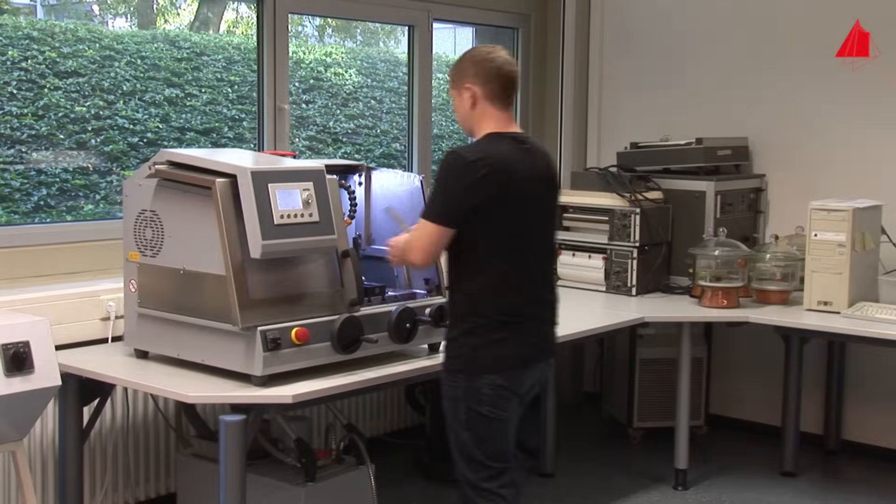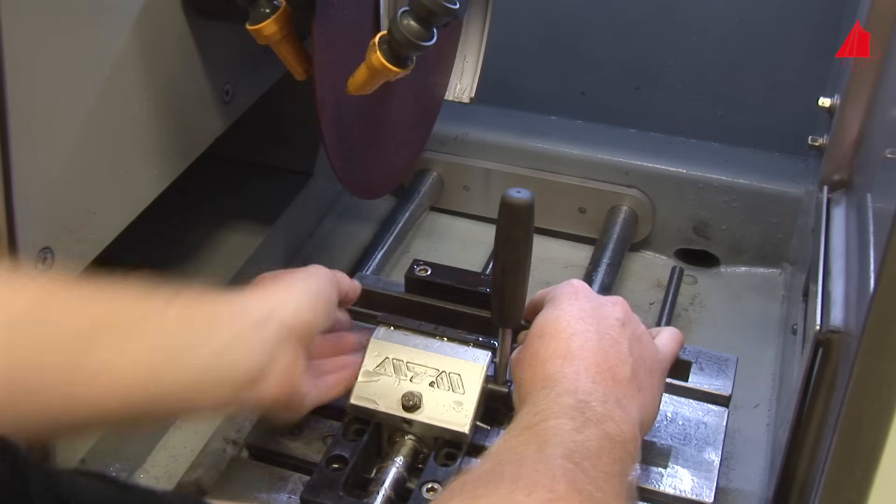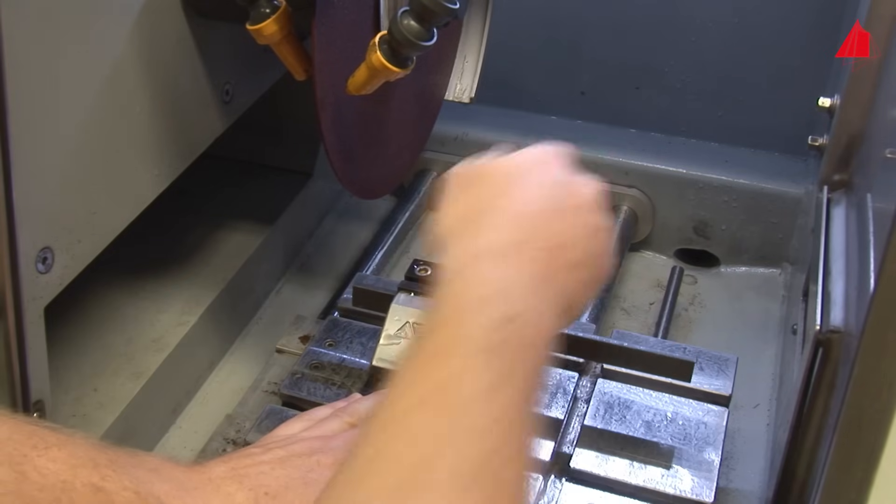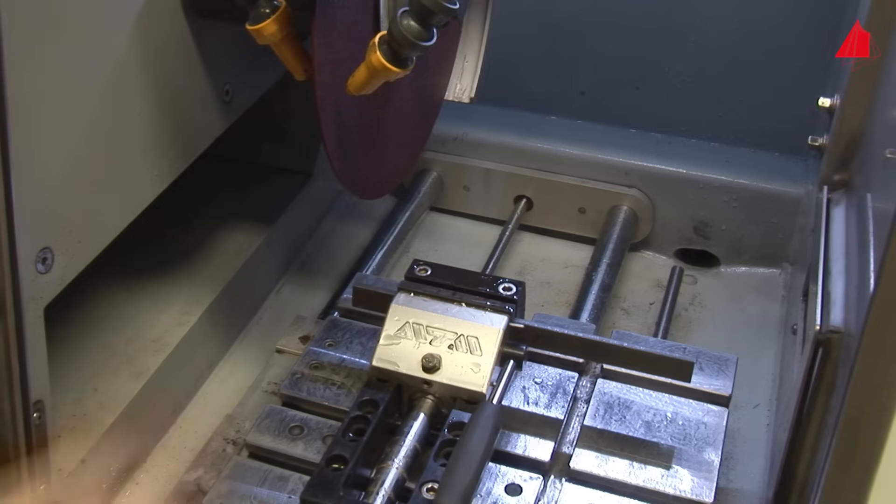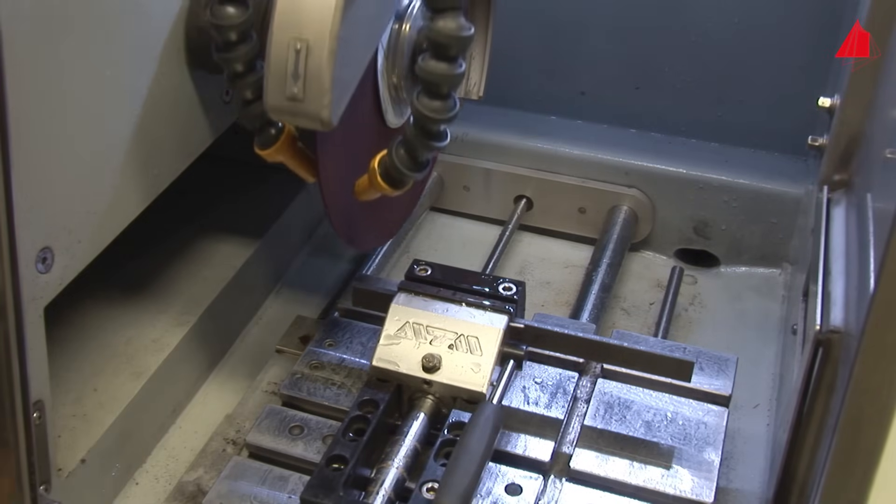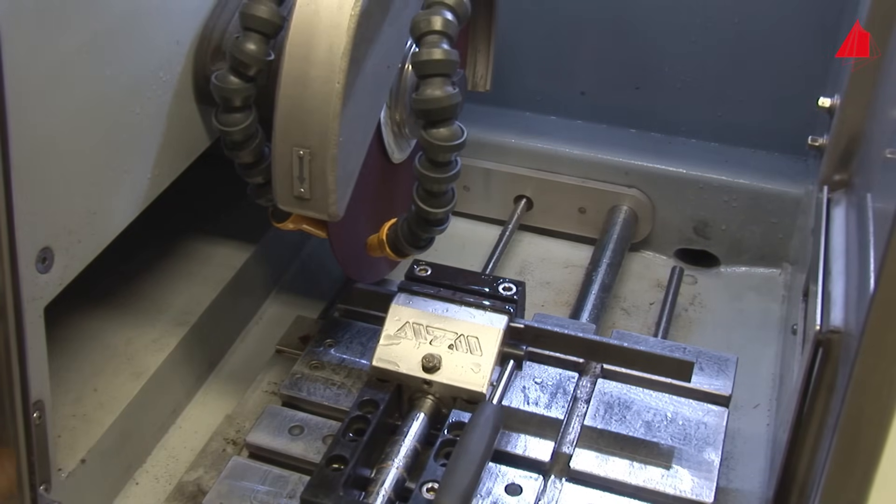Then, he takes the bar to the abrasive saw to cut out a small sample. He fixes the bar securely, prepares the machine, selects the cutting parameters and starts the first abrasive cut.